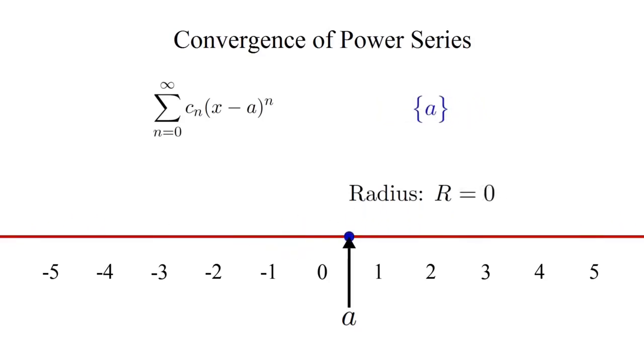R equals zero means the interval of convergence only contains one single point, the center point A, at which any power series always converges. But for the most part, we'll be looking at series whose radius is both positive and finite.